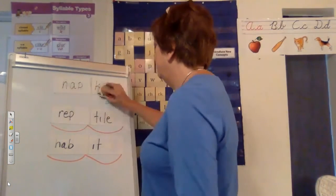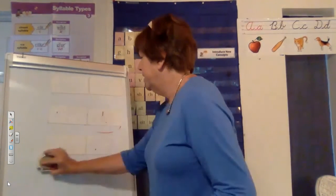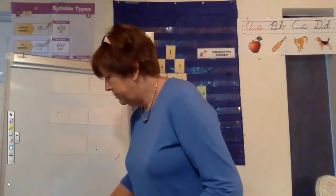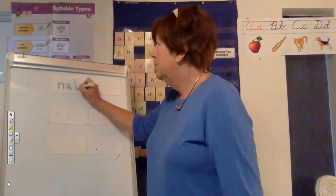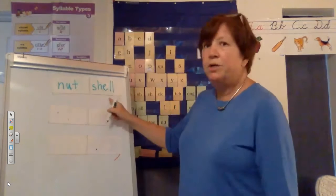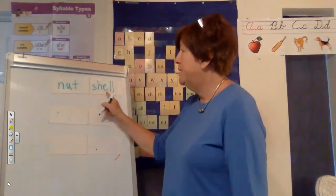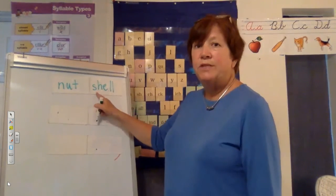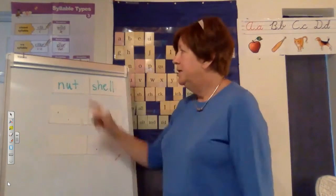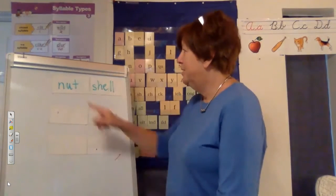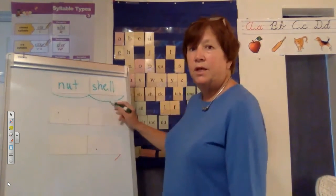Let's try another big word. I have U and E as my vowels, so I knew I had to split between them. But I see a digraph in there — the SH. We always keep a digraph together, so we keep SH with the second syllable and put the T with the first syllable. This is also a compound word with two closed syllables. First syllable: nut. Second syllable: shell. Whole word: nutshell. Good job.